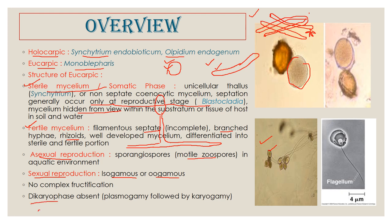So there is no dikaryophase. After the gametes fuse there is plasmogamy — that is, fusion of the protoplasts — and then karyogamy occurs soon after, followed immediately by meiosis. So there is no dikaryophase — that is, no prolonged diploid phase.